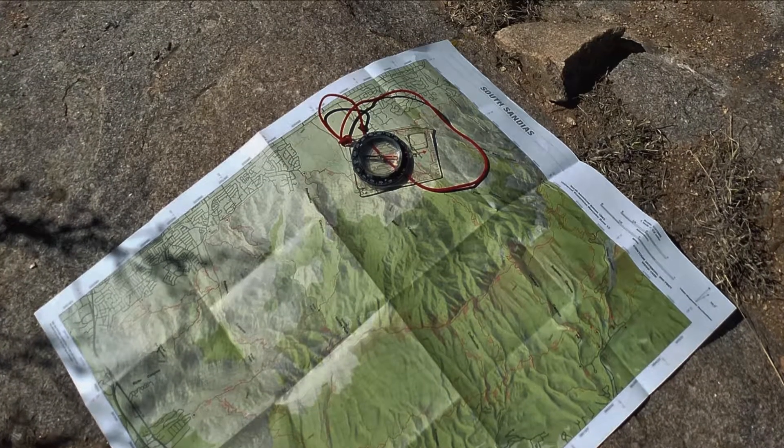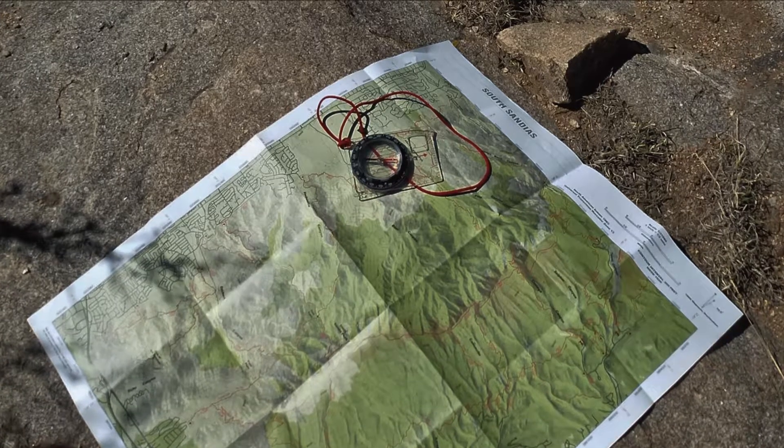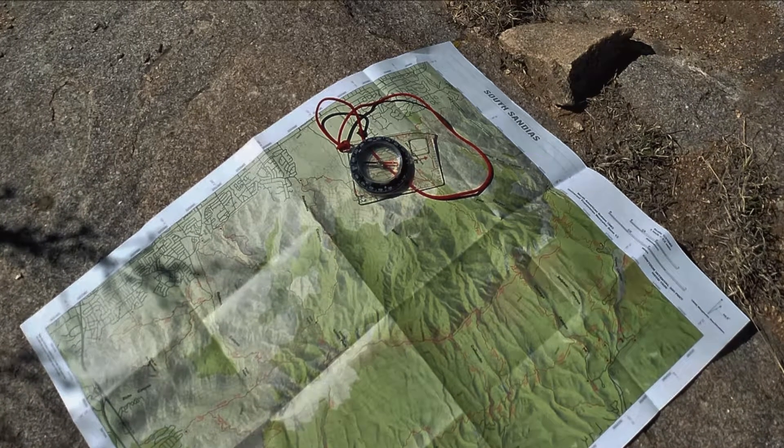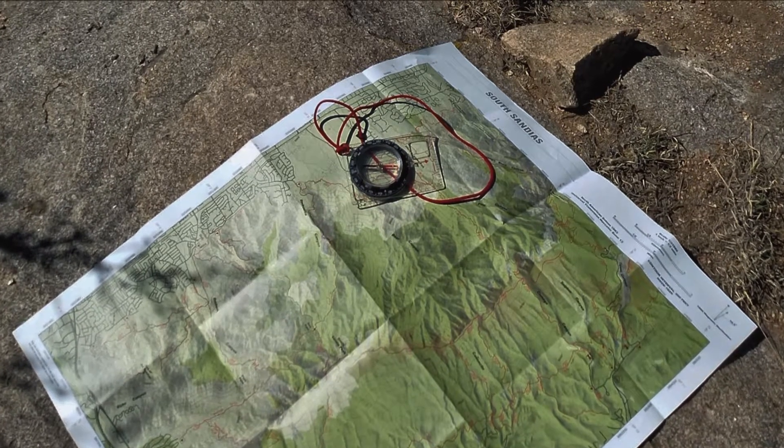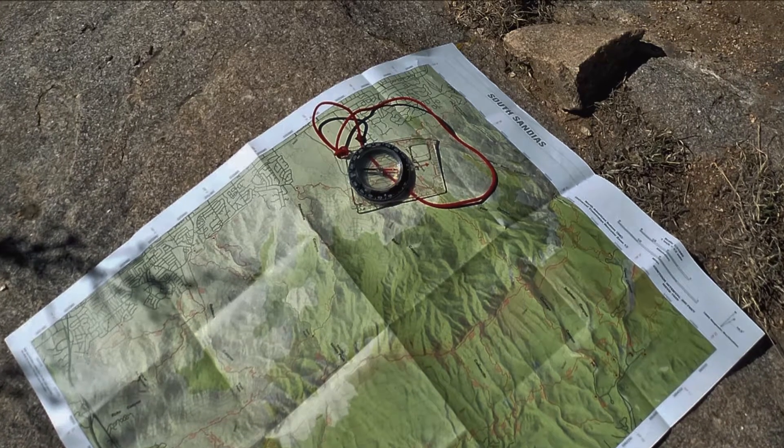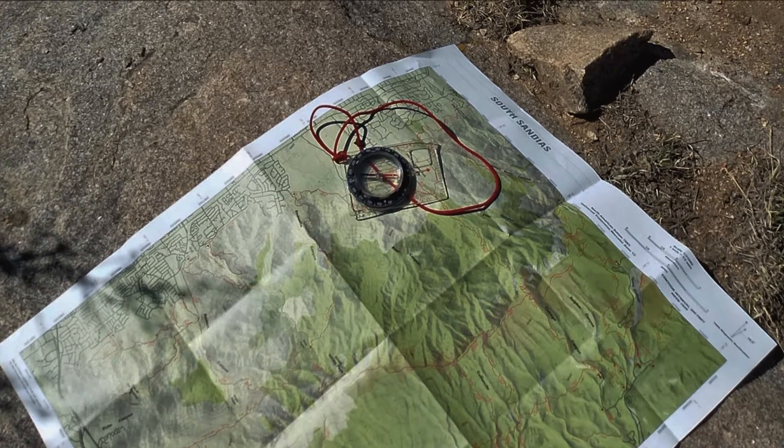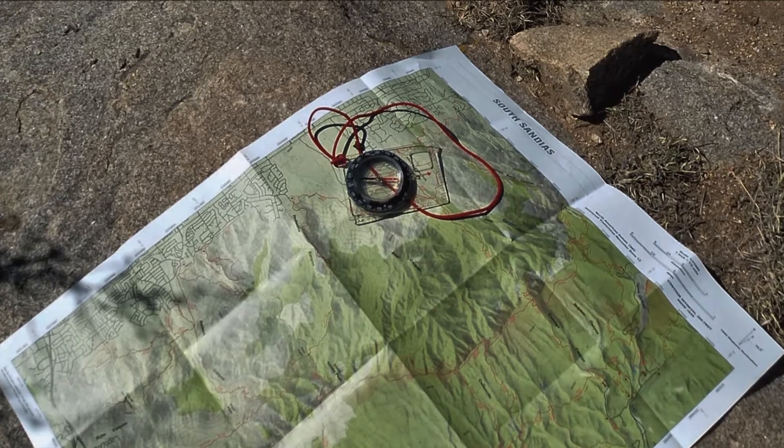In the first two videos in this series I showed how contour lines indicate relative differences in elevation and how to recognize basic topographic features such as ridges and valleys. In this video I'll talk about how topographic maps indicate absolute elevation.